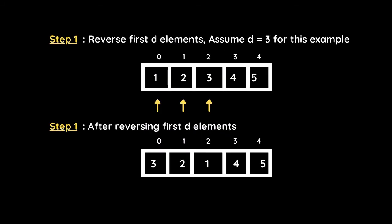Now let's see how we implement this algorithm. In step one, assuming d is 3, we reverse the first three elements: one, two, and three — pointed by the yellow pointers. After reversing the first d elements, our array becomes three two one four five. The elements four and five remain as-is, but one two three has been reversed.